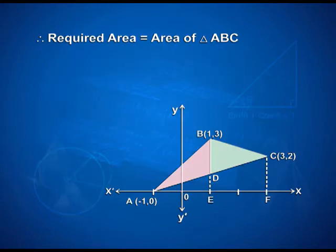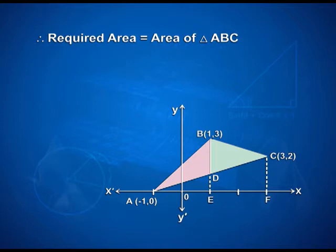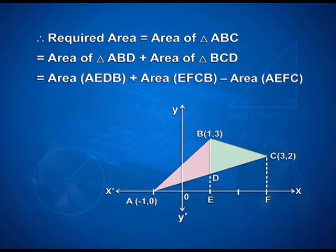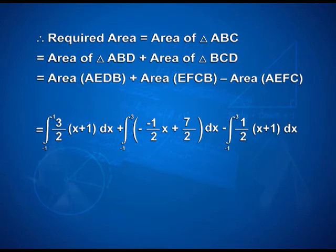Therefore, the required area equals area of triangle ABC, obtained by calculating area of triangle ABD plus area of triangle BCD, which equals area of region AEDB plus area of EFCB minus area of AEFC. This gives: integral from -1 to 1 of (3/2)(x+1) dx, plus integral from 1 to 3 of (-x/2 + 7/2) dx, minus integral from -1 to 3 of (1/2)(x+1) dx.